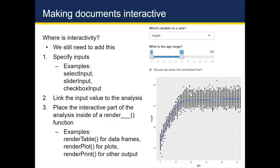As an example, if we took the question from lab five where I asked you to show the relationship between age and height, you could make this interactive by letting the user choose what goes on the y-axis — height or weight. I could also choose to limit the age range on the x-axis, with a default of 0 to 100. And finally, maybe I want a checkbox that lets the user toggle a smooth line on the plot.